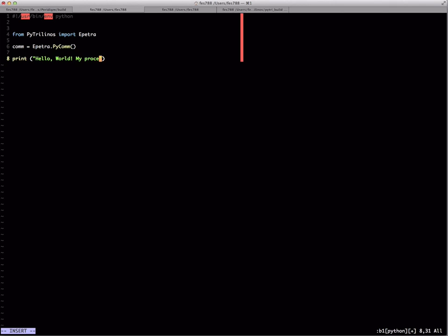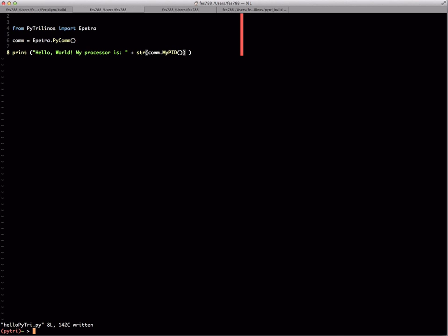Of course, in parallel, we want to say my processor is so that we can then report. And the interface is a little bit different, but what we're going to say is comm.MyPID. So in a way it's a little different, but maybe even a little more intuitive. MyPID stands for my processor ID, as opposed to the MPI attribute which would be rank, of course. So anyway, I think we should be able to run this then. So if we make it executable.